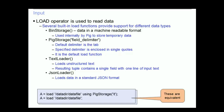The BinStorage function is used to read data in a machine-readable format. This is used by pig internally to store temporary data. There is also a JSON loader, which loads data that is in a standard JSON format.